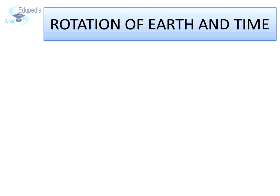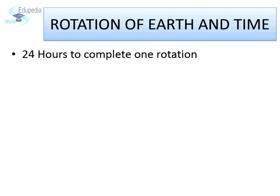Each day we notice that the sun rises in the east and appears to move across the sky. The apparent movement of the sun is caused due to the rotation of earth on its axis from west to east direction. This daily motion of the earth is the best way to deal with time. As earth completes one rotation in 24 hours, it makes a 360 degree circle. This tells us the distinct relationship between the longitudinal location of a place and time.